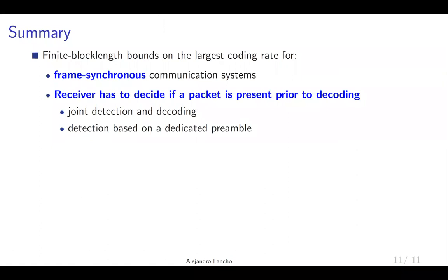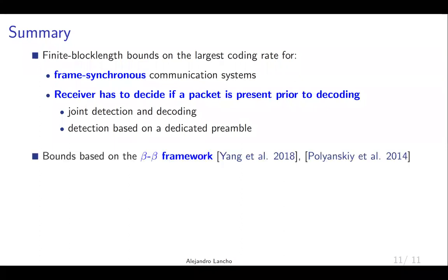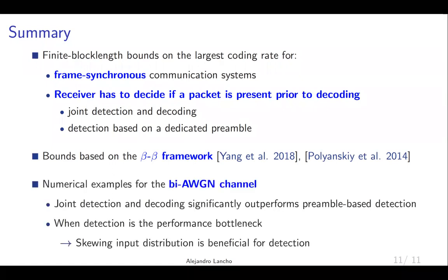Now it's time to wrap up and summarize what we have seen during this talk. We have presented finite blocklength bounds on the largest coding rate for frame-synchronous systems, where the receiver has to decide if a packet is present prior to decoding and, if so, to decode it. We have presented bounds for joint detection and decoding — when both detection and decoding are performed over data packets — and for preamble-based detection and decoding. We have shown that joint detection and decoding significantly outperforms preamble-based detection, and that when detection is the bottleneck, skewing the input distribution is beneficial for detection. Thank you very much.